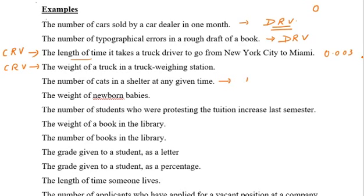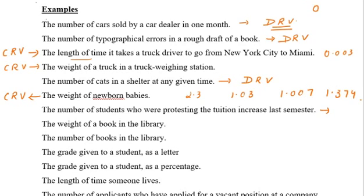Example 5: the number of cats in a shelter at any given time — this is a discrete random variable. Example 6: the weight of newborn babies — weight can be 2.3, 1.03, 1.007, 1.374, and so on — so this is a continuous random variable. Example 7: the number of students protesting a tuition increase — it could be 0, 1, 2, 3, and so on — a discrete random variable.